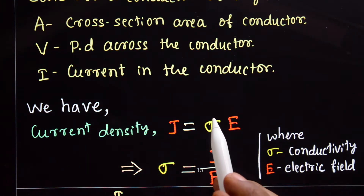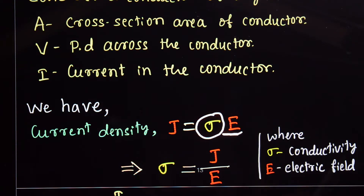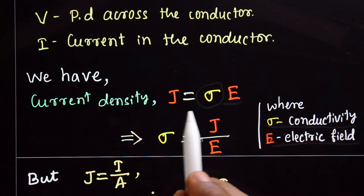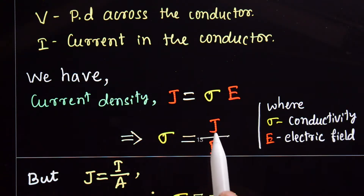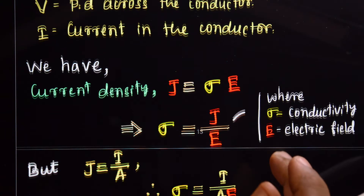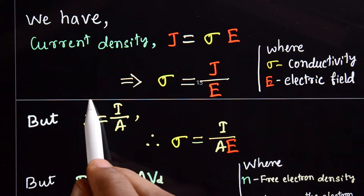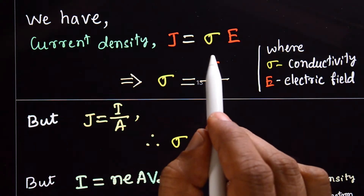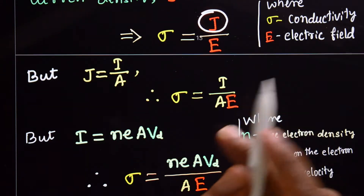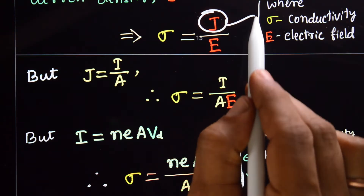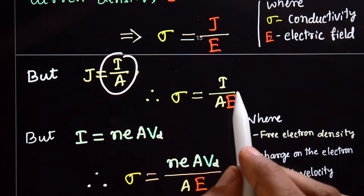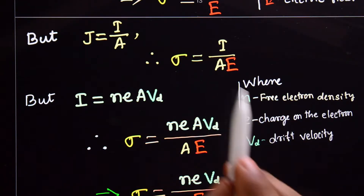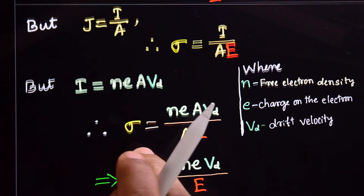We have the current density formula: j equals sigma times E. We can rearrange this as sigma equals j divided by E. By the definition of current density, j equals I divided by A, so we substitute to get sigma equals I divided by A times E.